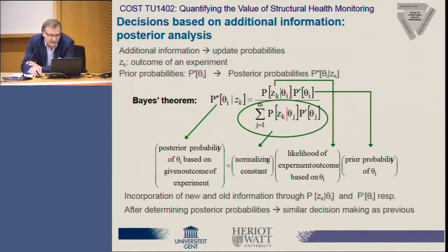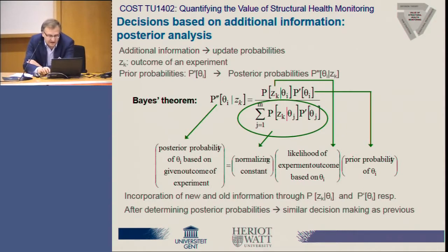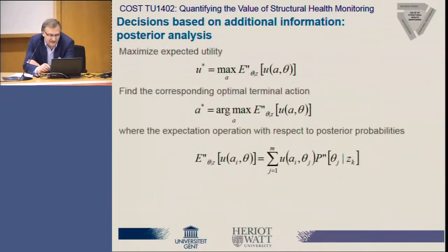In order to do that, we use Bayes' theorem. The additional information required are the so-called likelihood functions, which describe the probability of getting a certain experiment outcome given a certain state of the structure we are considering. After that, the decision process is very similar.